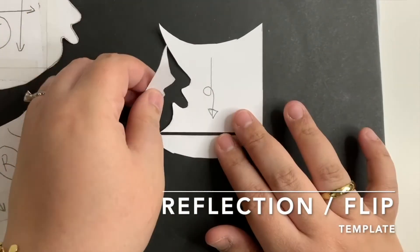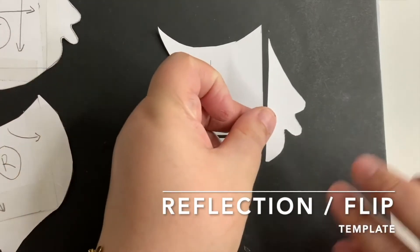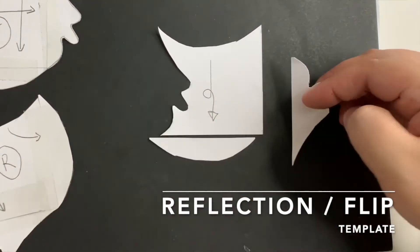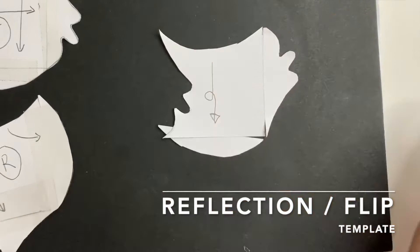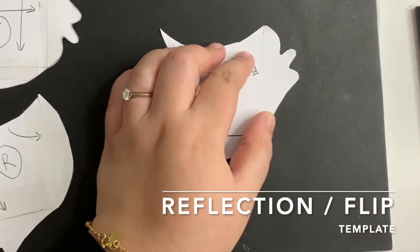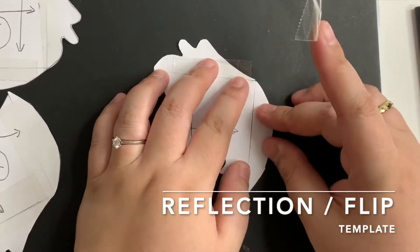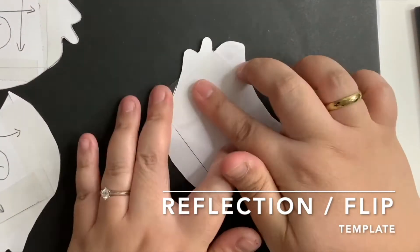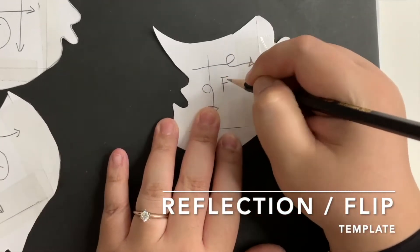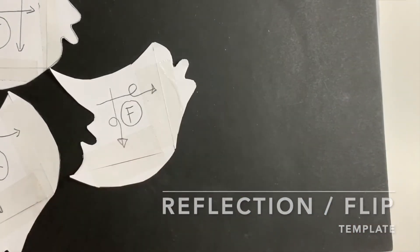Do the same to the left piece. Slide it to the opposite side and flip it. Tape them down on both sides and trim the excess tapes. I'm going to call this the flip template.